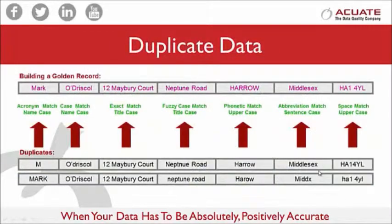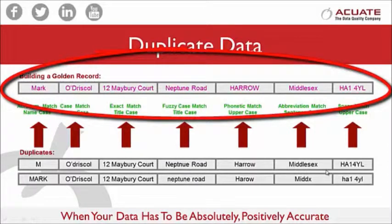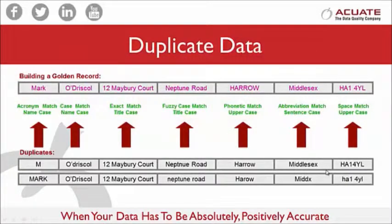Duplicates are present in almost all databases. You need to be able to identify duplicates with techniques like fuzzy matching, sound matching, acronym matching, or abbreviation matching. Once duplicates are identified, you want to pick a golden record or master record using defined rules, then merge the records into a single customer view.